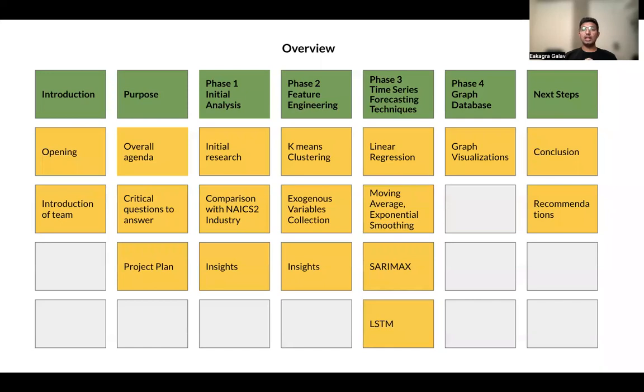In Phase 3, we are using different techniques like linear regression, moving average, exponential smoothing, SARIMAX, and dynamic regression to come up with a good time series forecasting technique with the least MAPE so we could have a good model and better forecasting results.